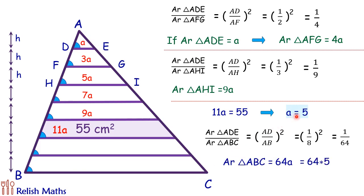Putting here the value of a = 5, we are getting the area of triangle ABC is 320 cm², and that's our answer. I hope you enjoyed the solution. I will see you in the next video. Till then, tata, bye bye.